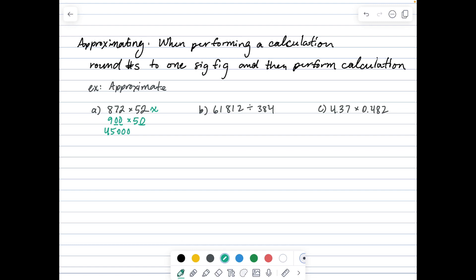For part B, we round 61,812 to 60,000 and 384 to 400. Now we're doing 60,000 divided by 400. We can cancel off duplicate zeros, so it's actually just 600 divided by 4. 60 divided by 4 is 15, so 600 divided by 4 is 150.